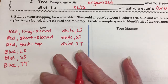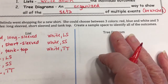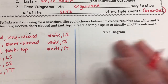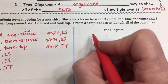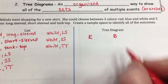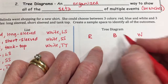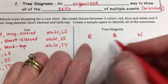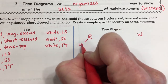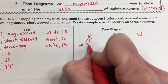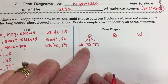We're going to look at the same problems we used before. We already have a list of what should be in the sample space — we're just going to show it a different way. For the tree diagram, you start at the top with the first category: colors. So we could start with red, then blue, or white. Underneath each color, you draw branches for each shirt style — it could be long sleeve, short sleeve, or tank top.